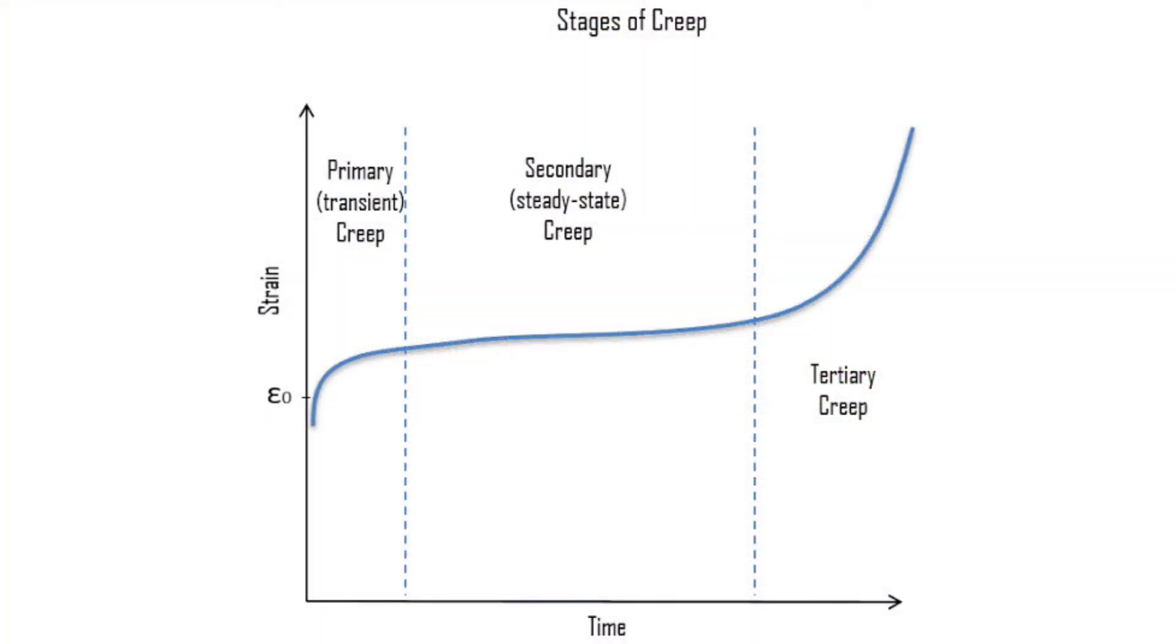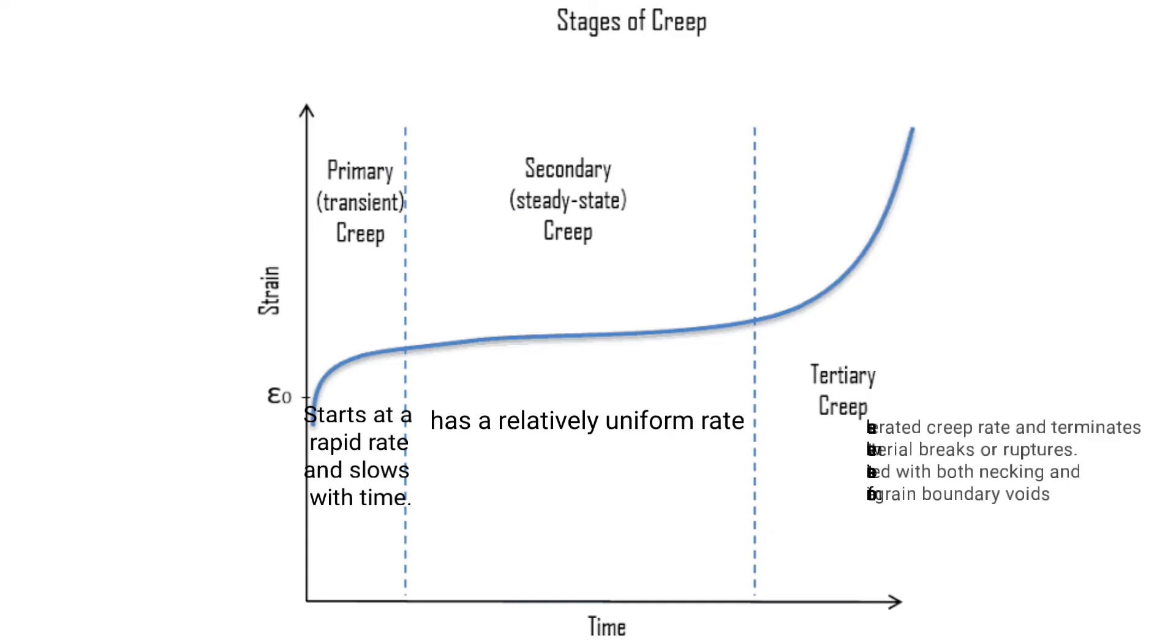There are three stages of creep. Primary creep starts at a rapid rate and slows with time. Secondary creep has a relatively uniform rate. Tertiary creep has an accelerated creep rate and terminates when the material breaks or ruptures. It is associated with both necking and formation of grain boundary voids.